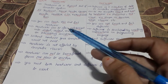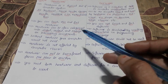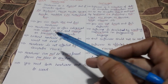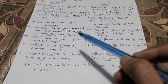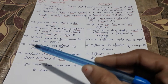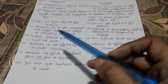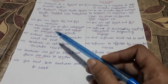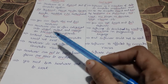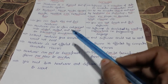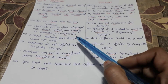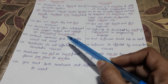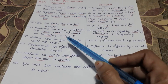Hardware can be categorized into input, output, storage, and processing components. For example, output devices, input devices, and storage devices are all types of hardware.